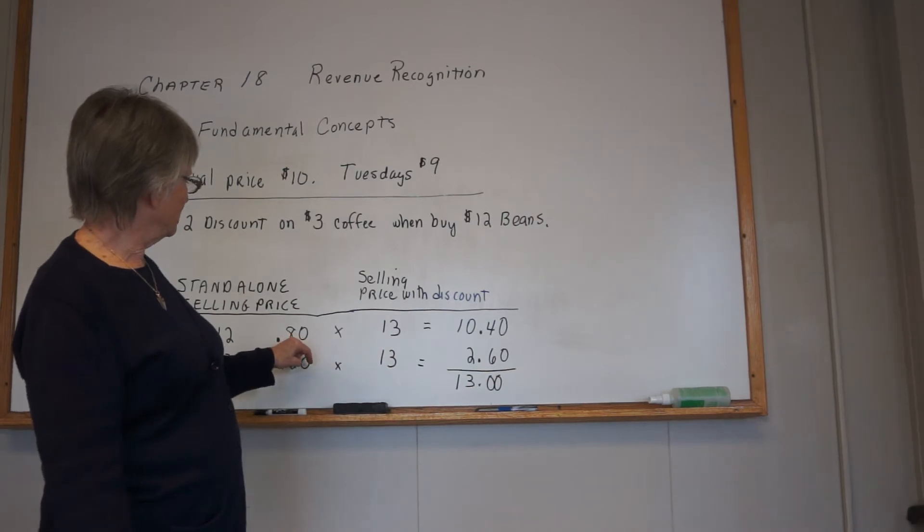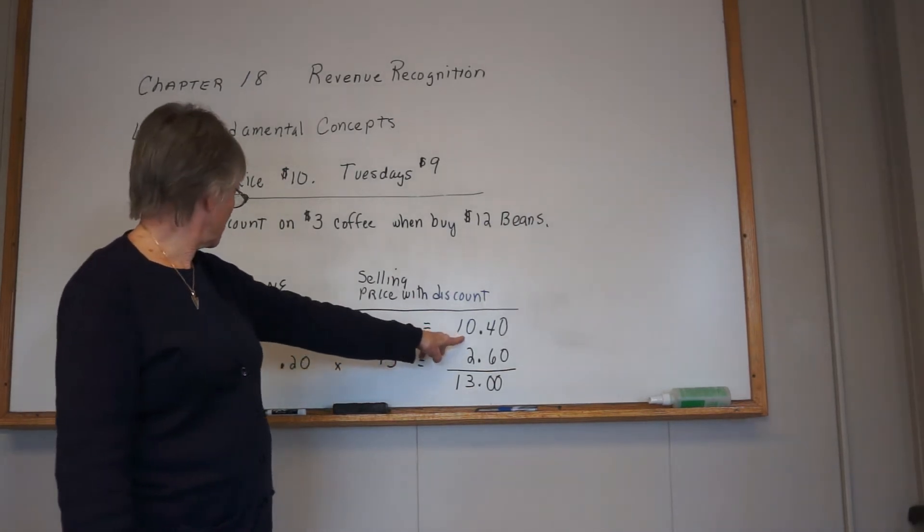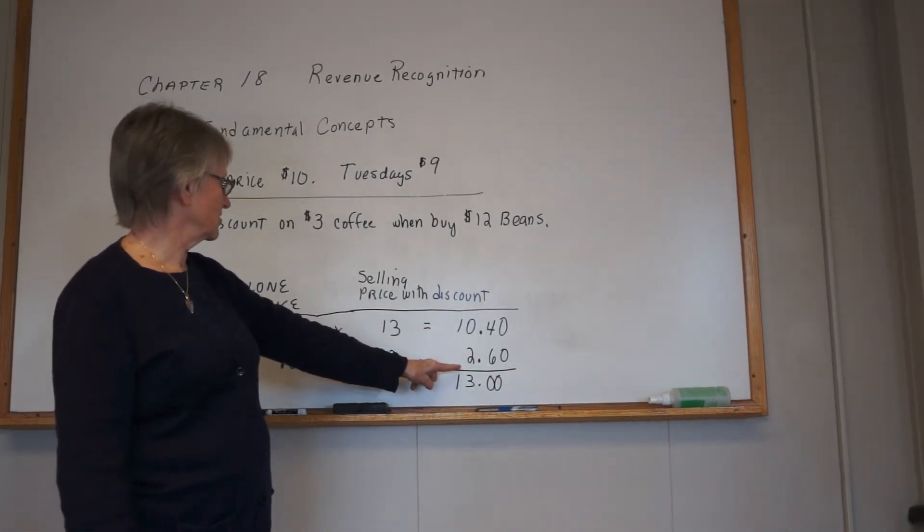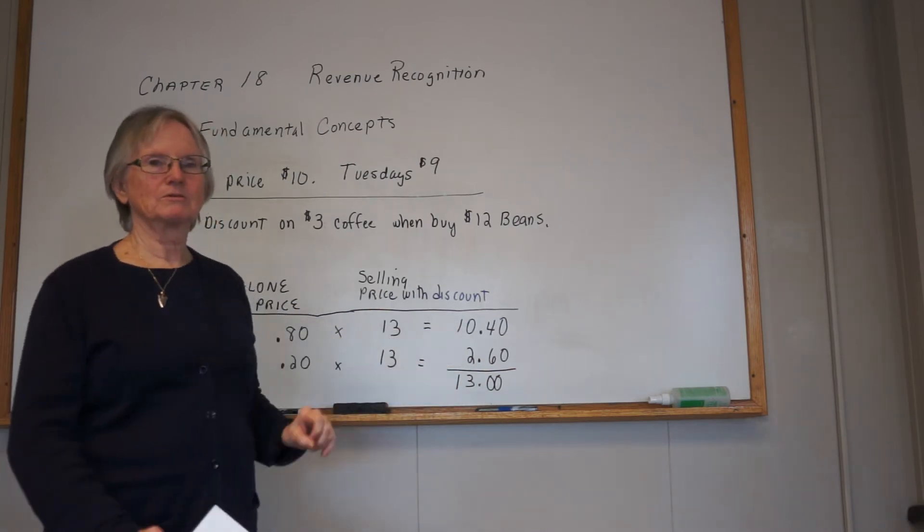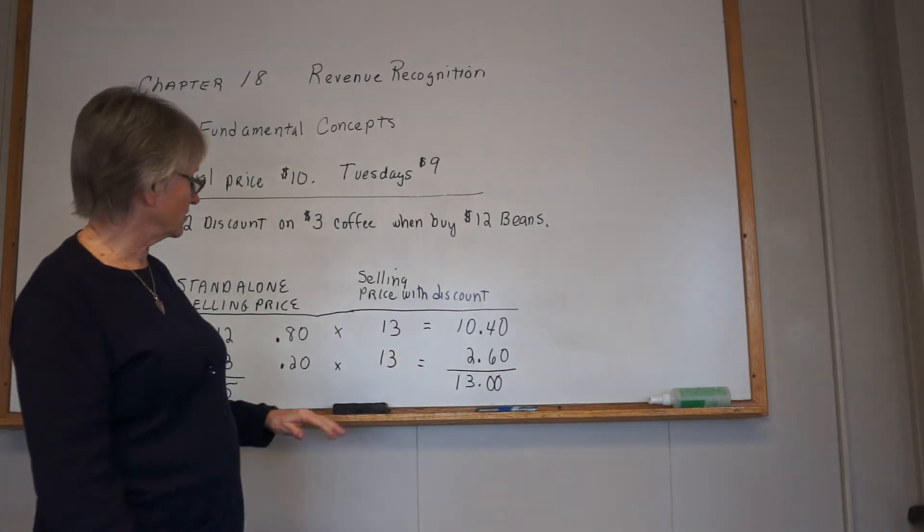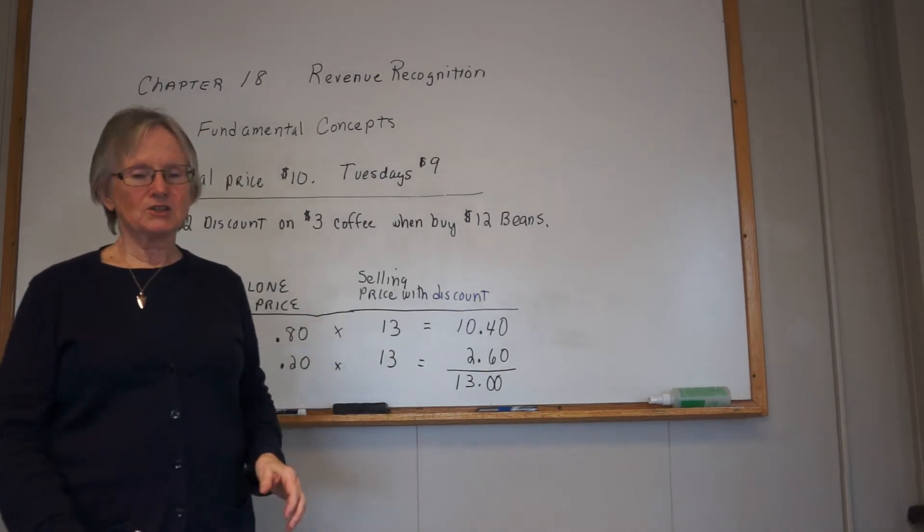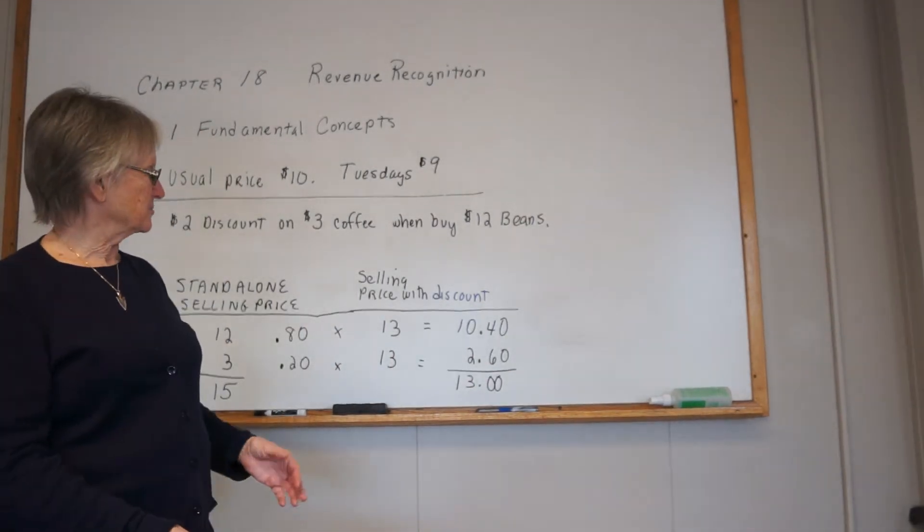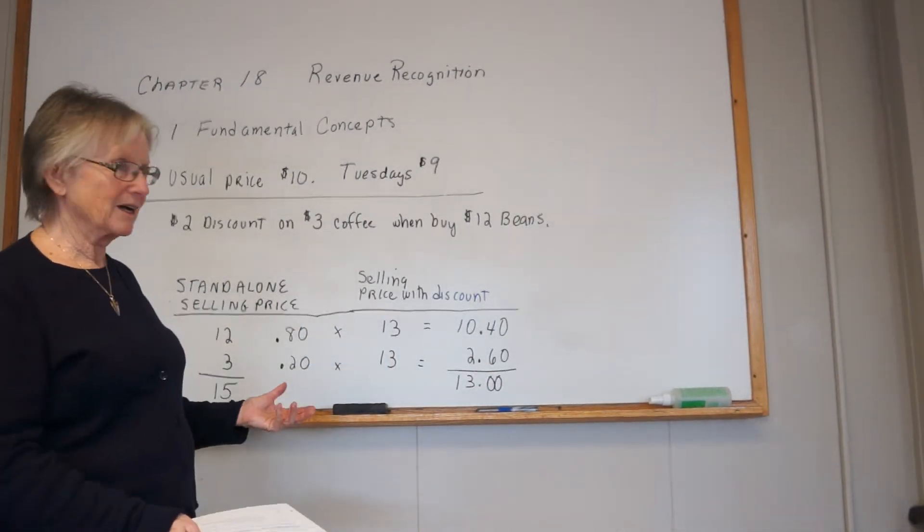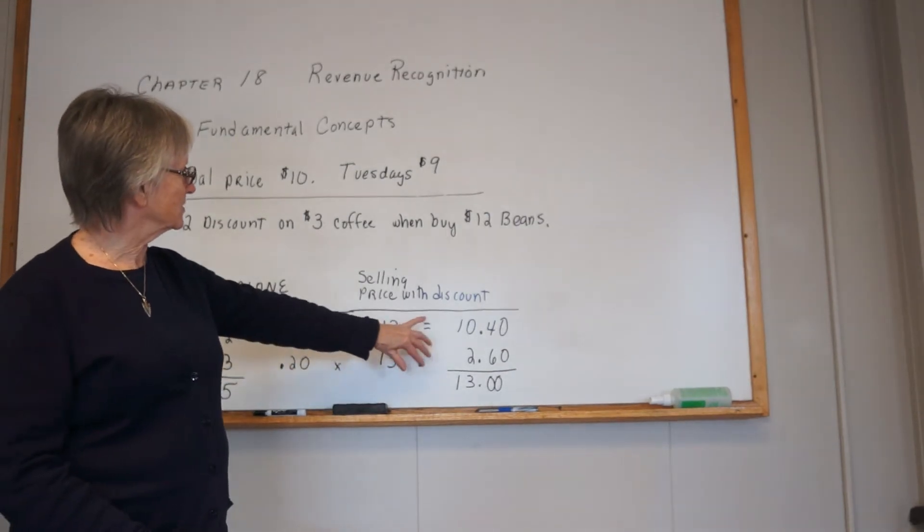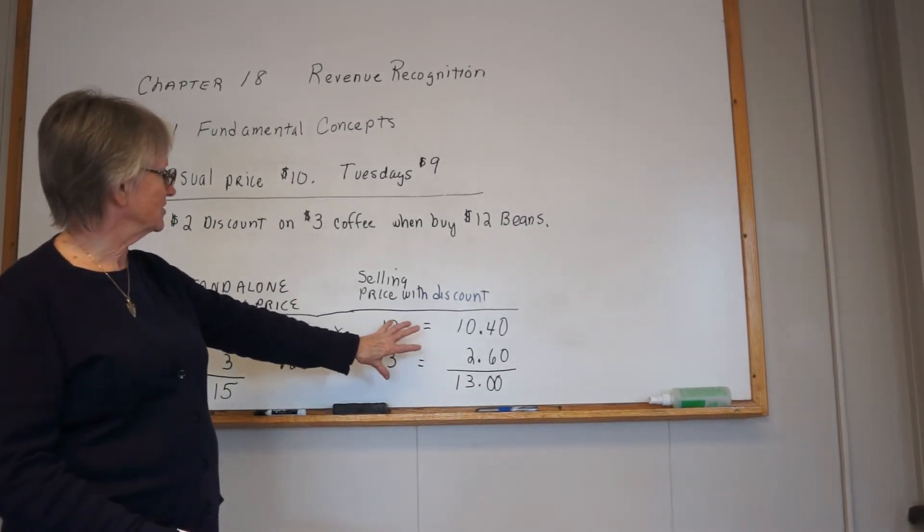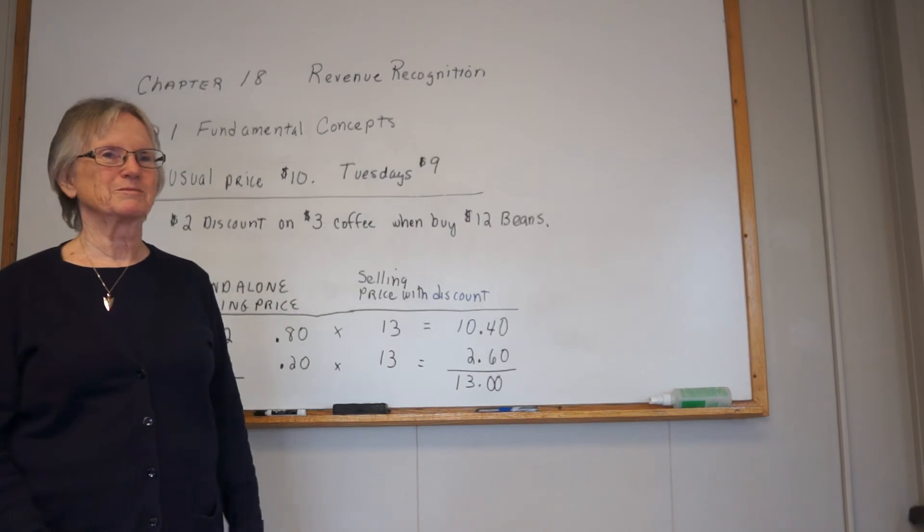So you go 80% times $13 - $10.40 would be allocated to the beans, $2.60 to the coffee, for a total transaction price of $13. Assuming the customer picked up both of these at the same time, which would be logical, you would recognize both performance obligations when the customer received them.